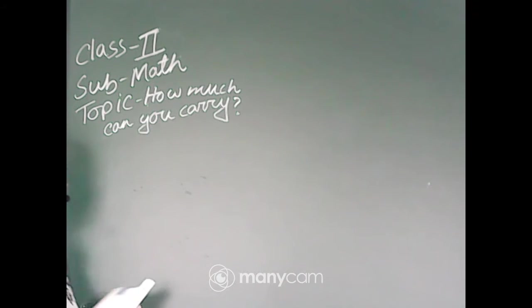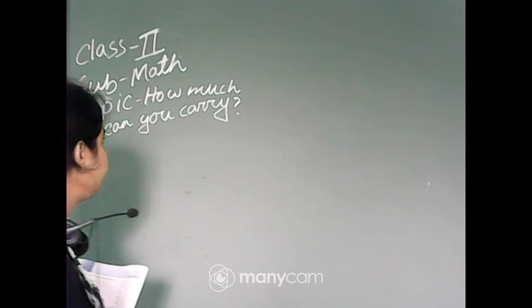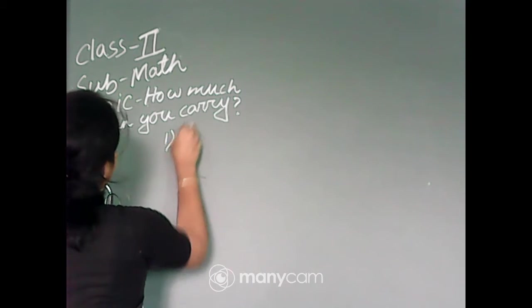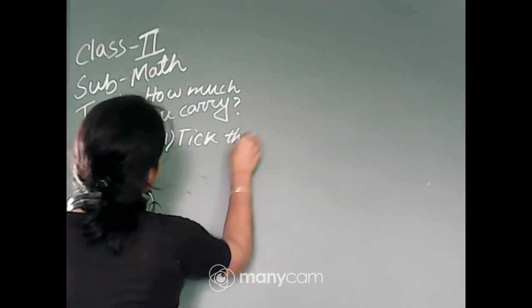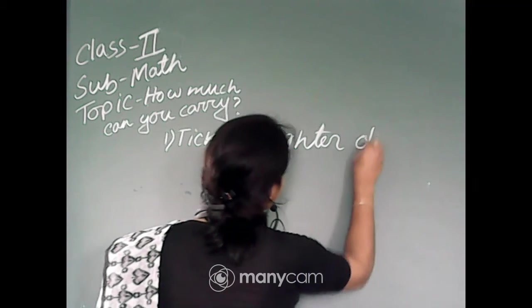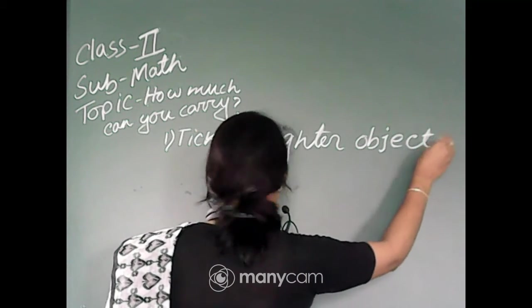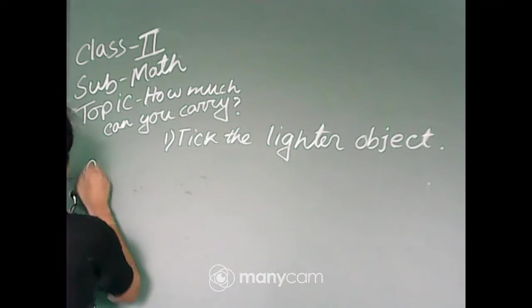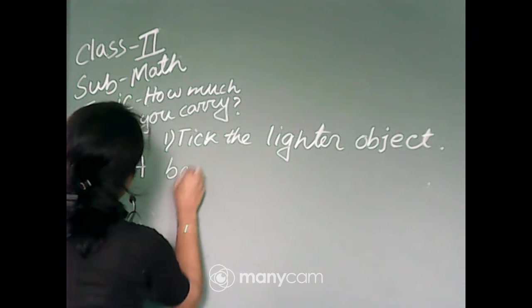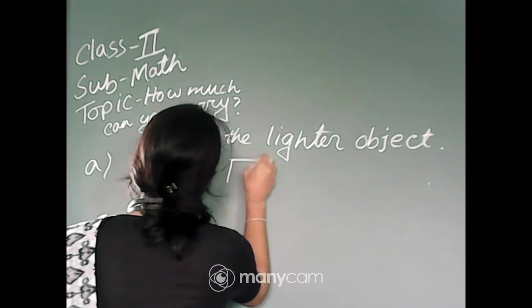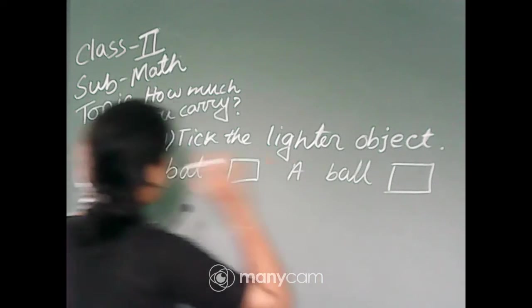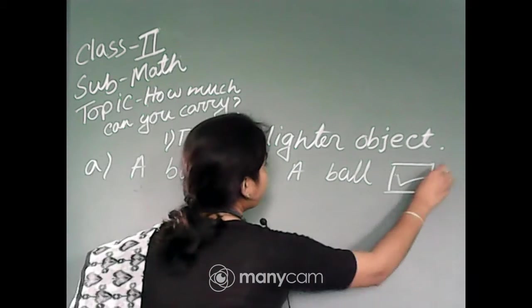Let's start now, all of you please take out your math notebook and follow me. Take the lighter object. Number 1, tick the lighter object. Number A: a bat or a ball. Bat or ball? You all know, bat.